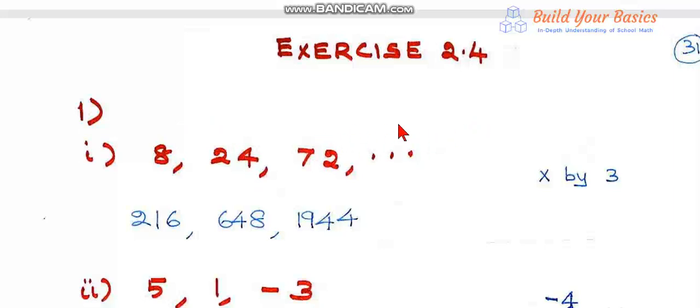Therefore, the next three terms can be got by multiplying by 3. 72 times 3 equals 216, 216 times 3 equals 648, 648 times 3 equals 1944. So the three terms are 216, 648, and 1944.